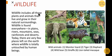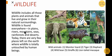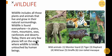Wildlife includes all those plants and animals that live and grow in their natural surroundings. Wildlife is found everywhere — in plains, rivers, mountains, seas, and deserts. There are very few places left on Earth where wildlife is totally untouched, meaning wild animals and forest plants can be found almost everywhere.